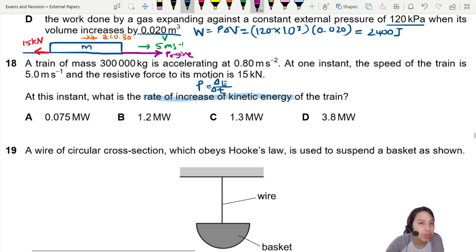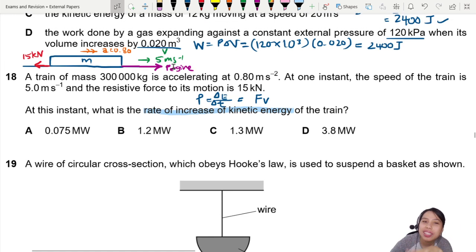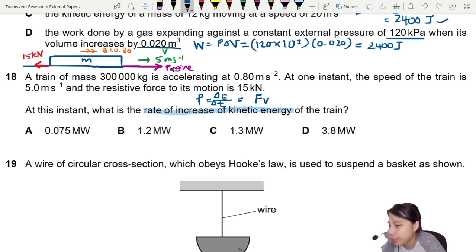So power is energy over time, which can also be expressed as force times velocity. P equals FV. But you see this F, which F do we use? There's two forces: 15 kilonewton and some unknown engine force pushing it forward. That's where we gotta use Newton's second law to help us a little bit here.